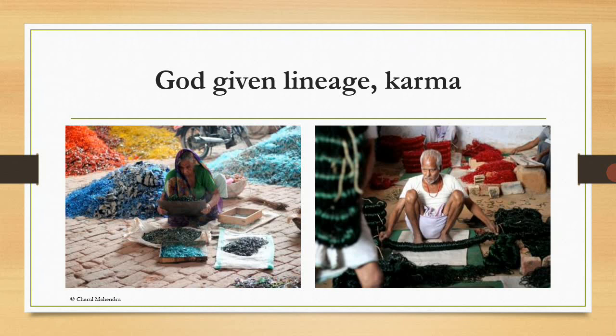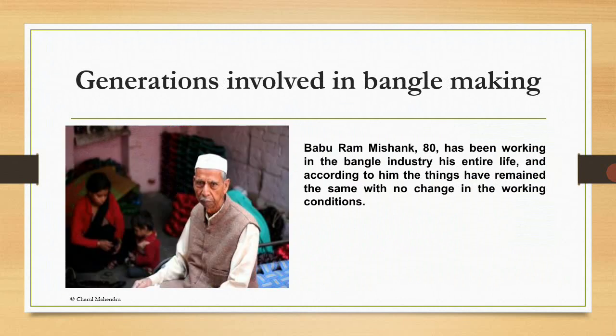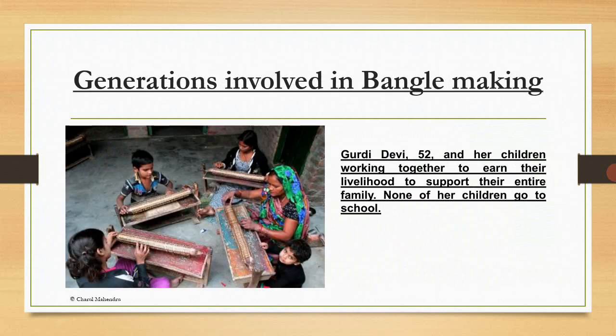This is the theory of these people — they feel that it is their karma and God has put them in this profession of making bangles. Generations are involved in bangle making. Mansi, 12, is working on beautification of a set of bangles. Children are engaged into the trade by their families at an early age. Baburam Mishank, 80, has been working in the bangle industry his entire life, and according to him, things have remained the same with no change in working conditions. Gurdhi Devi, 52, and her children are working together to earn their livelihood to support the entire family.